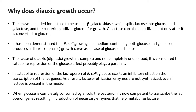Now let's see why diauxic growth occurs. The reason is actually in the mechanism of the lac operon and glucose. The enzyme needed for lactose utilization is beta-galactosidase. This enzyme splits the lactose into glucose and galactose. The bacteria prefer glucose first for growth, and then lactose can be utilized but only after it is converted to glucose — and it is converted to glucose by galactose metabolism, which is another lengthy process. So the bacteria always prefers glucose first over the other sugars.